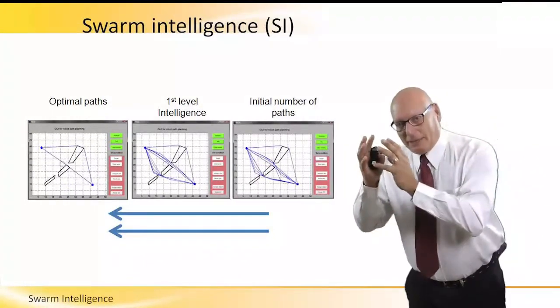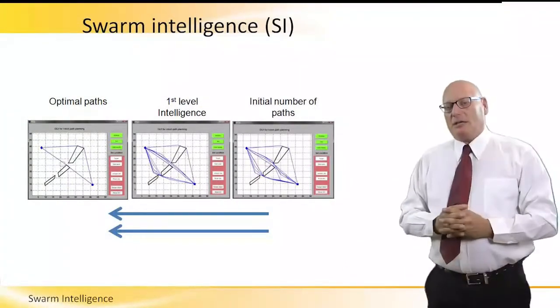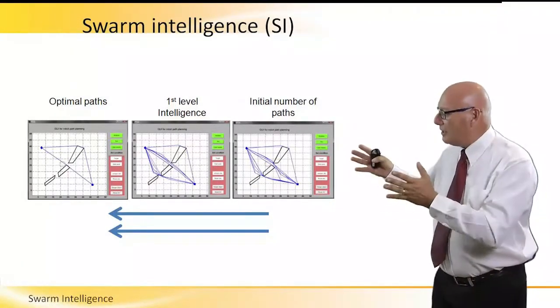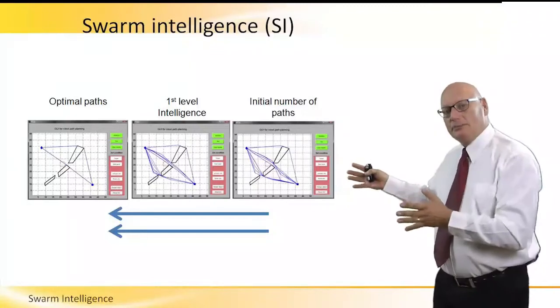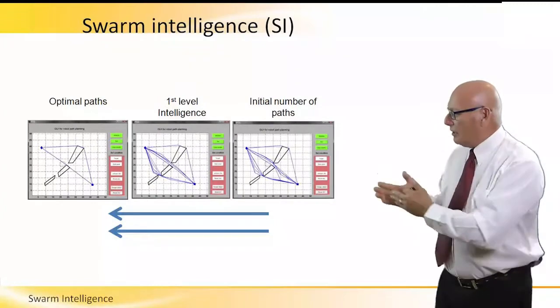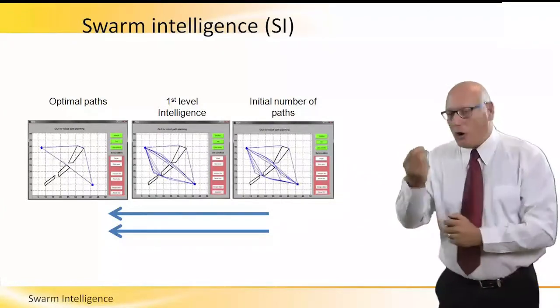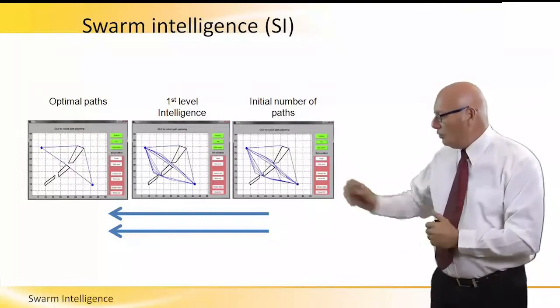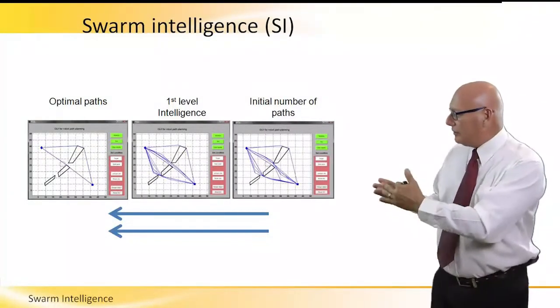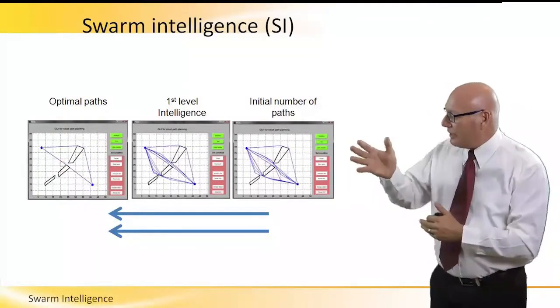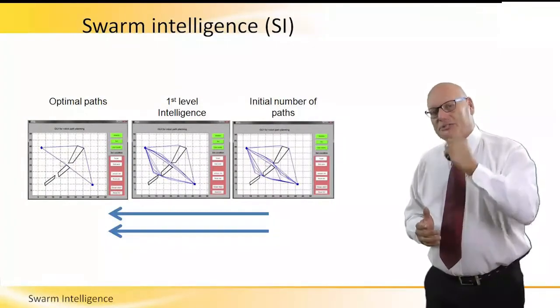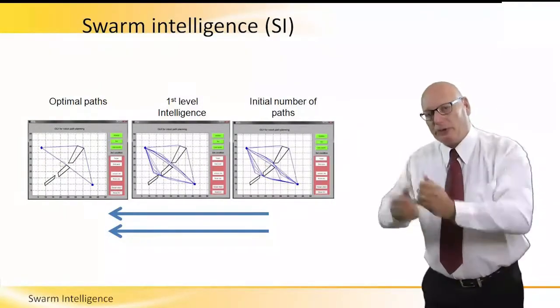And the principle of the SI, as we said before, is shortening and minimizing the various paths. As the picture on the right-hand side demonstrates, coming down to one optimal path. Going from a random path, initial number of paths, going through first level intelligence, reaching an optimal path when it is only one single path, which is the most effective path to go from point A to point B.